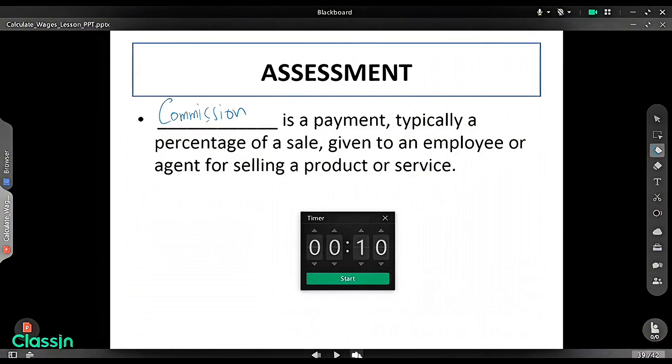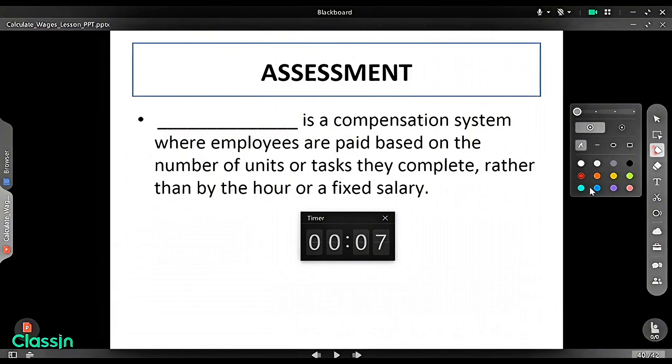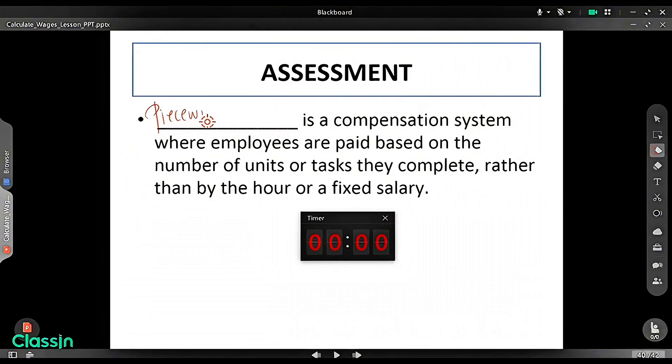Another question. You have 10 seconds. Your timer starts now. Blank is a compensation system where employees are paid based on the number of units or tasks they complete, rather than by the hour or salary. The answer is piecework pay. Very good.